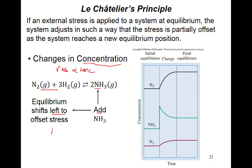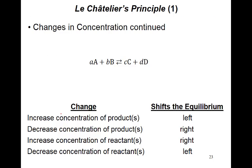Forward means going from left to right; reverse means going from right to left. So if ammonia concentration increases, the reaction goes in the reverse direction, towards the left. For the general equation A + B → C + D, stress means a change in concentration. Here A and B are the reactants and C and D are the products.